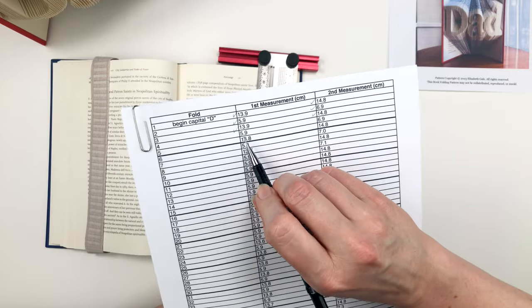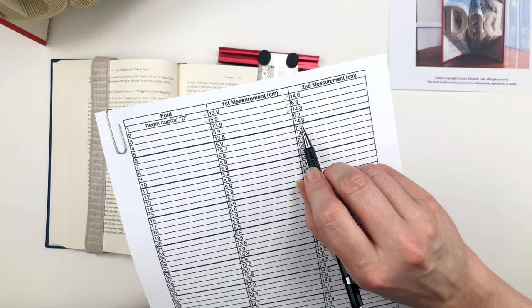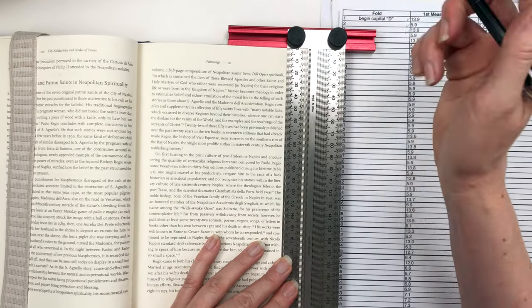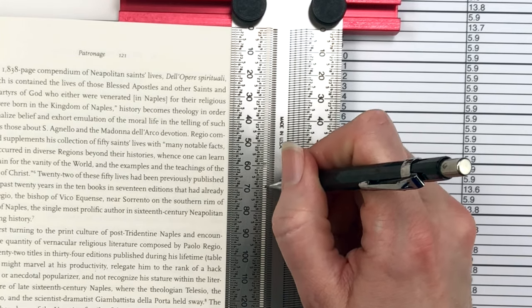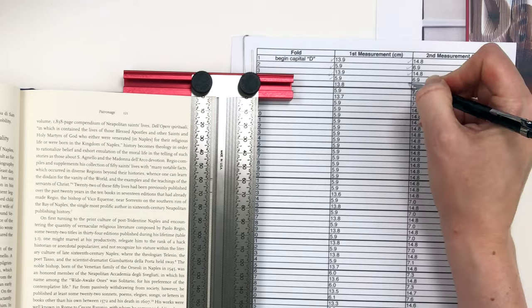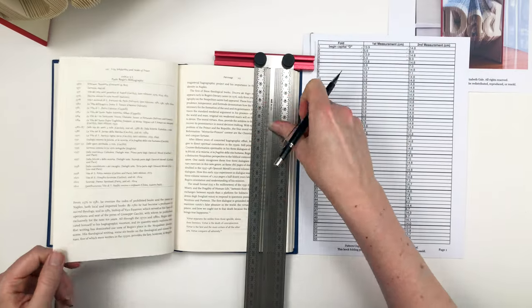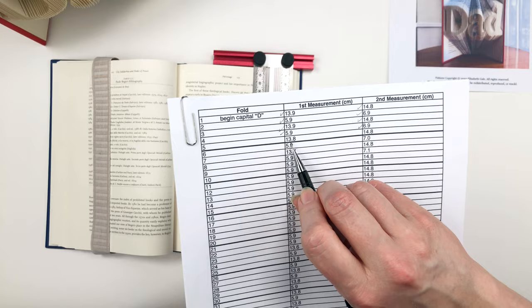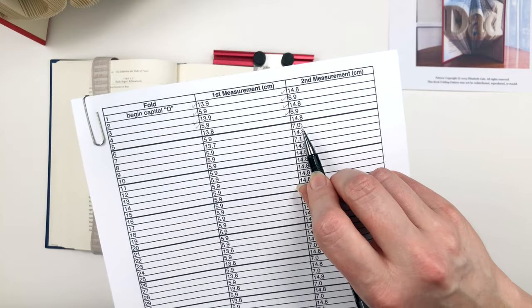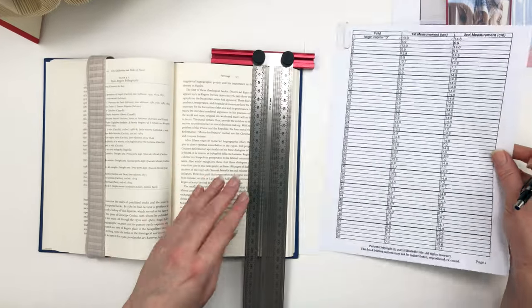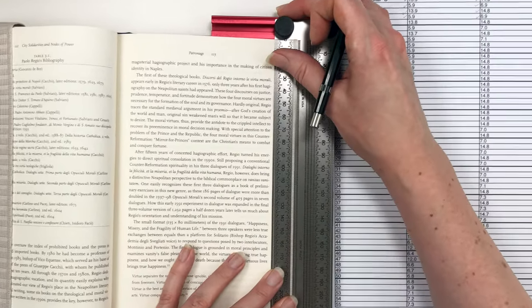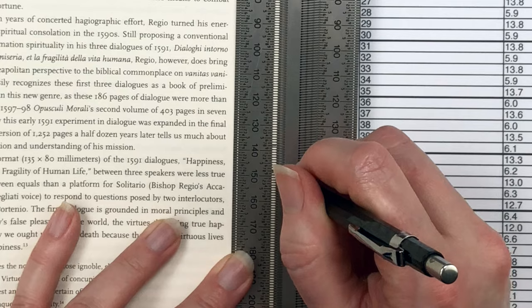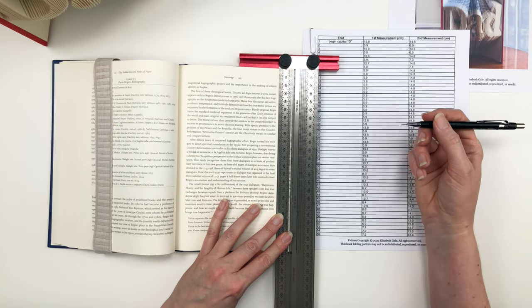And for fold number four, measurements of 5.9 and 6.9. And we'll mark one more. Fold number five, measurements of 13.9 and 14.8. And we have finished marking folds one through five. So now let's go back and fold those.